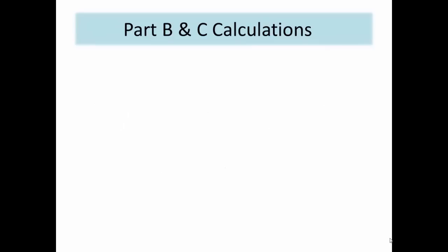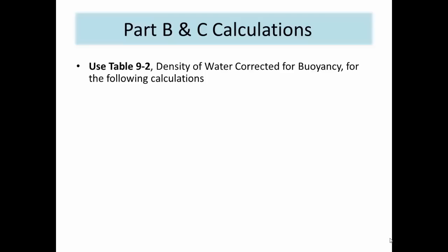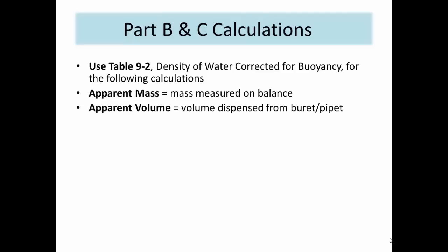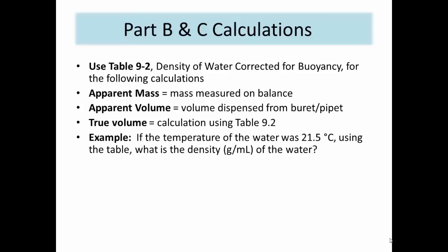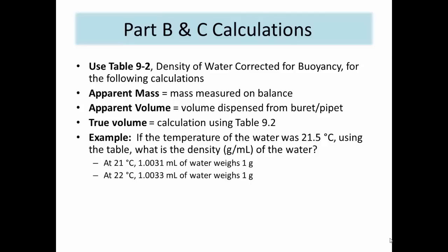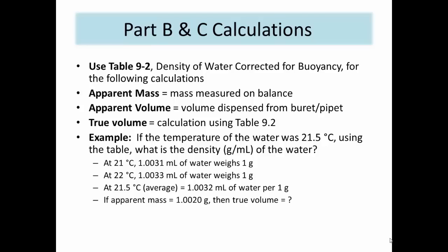Knowing the temperature of the water you used, the buoyancy-corrected volume of the fluid can be found. The apparent mass is the mass found by weighing the flask containing the water on an analytical balance, and the apparent volume is the amount dispensed from the burette or pipette. The true volume can then be found using the density of water at your specific temperature, which is listed in Table 9-2. If the measured temperature is between values on the table, calculate the correct density. If the temperature is halfway between two table values, the average of the two densities can be used; otherwise, use the interpolation calculation from slide 5. Once you have determined the density of water at the correct temperature, the true volume can be found by multiplying the apparent mass by the density.